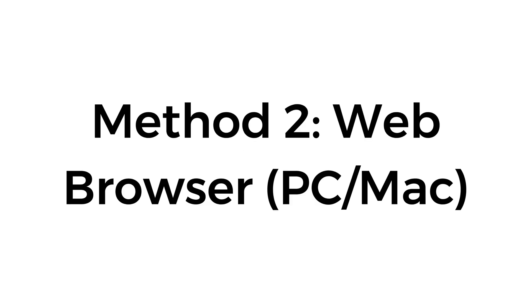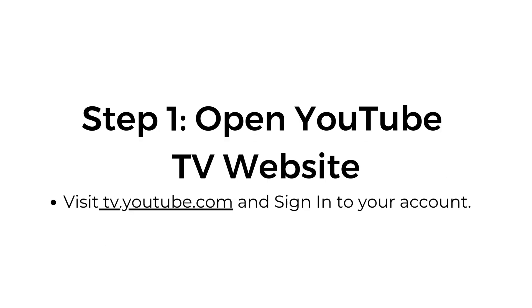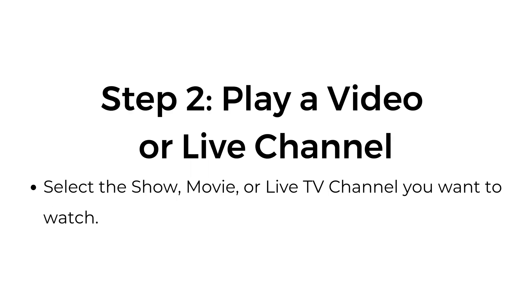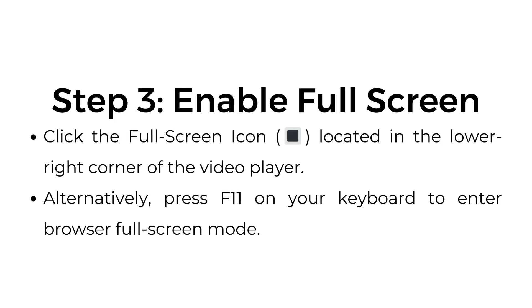Method number two: web browser — PC, Mac. Step number one, open the YouTube TV website. Visit tv.youtube.com and sign into your account. Step number two, play a video or live channel. Select the show, movie or live TV channel you want to watch.